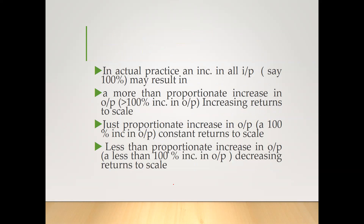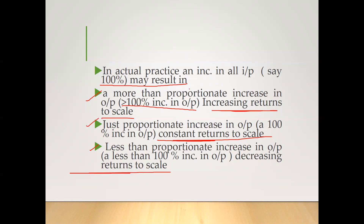In actual practice, if we increase all inputs by 100%, there are three possible outcomes. First, a more than proportionate increase in output — greater than 100% — is known as increasing return to scale. Second, a proportionate increase in output — exactly 100% — is known as constant return to scale. Third, a less than proportionate increase in output — less than 100% — is known as decreasing return to scale. We will discuss all three categories one by one.